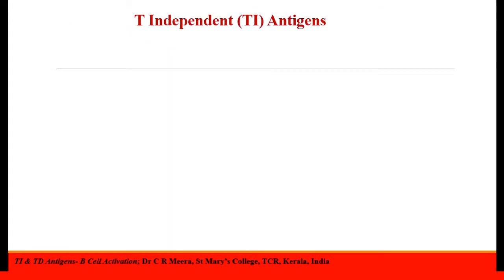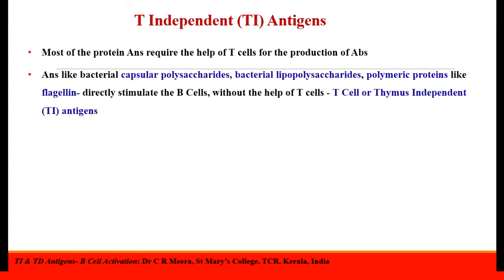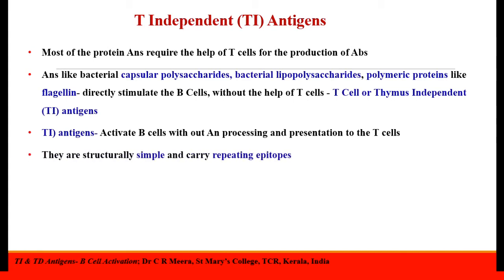Most of the protein antigens require the help of T-cells for the production of antibodies by the B-lymphocytes. However, antigens like bacterial capsular polysaccharides, bacterial lipopolysaccharides, and some polymeric proteins like flagellar protein flagellin can directly stimulate the B-cells to produce antibodies without the involvement of T-cells. They can directly activate the B-cells without antigen processing and presentation to the T-cells. Such antigens are called T-cell or thymus-independent antigens. They are structurally simple and carry repeating epitopes.